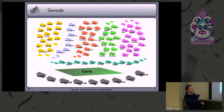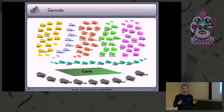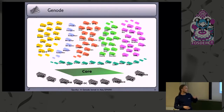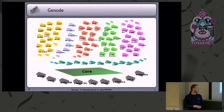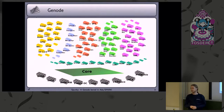You can see at the bottom of the picture that Gnode runs on several kernels, mostly micro-kernels. There are a lot of third-party kernels like Nova, SEL4, Fiasco OC, or Linux. There is also the in-house kernel I mentioned, which has the beautiful name BaseHw.